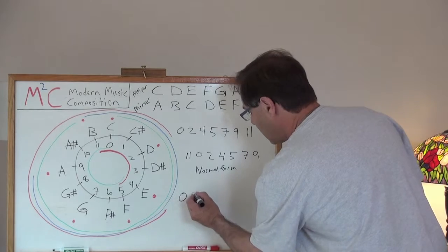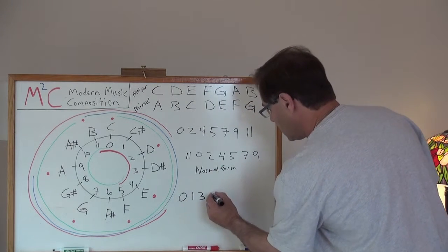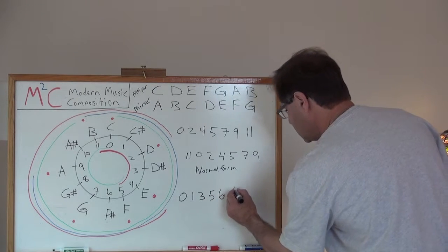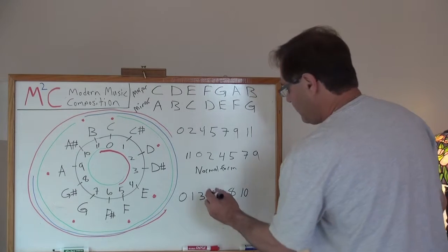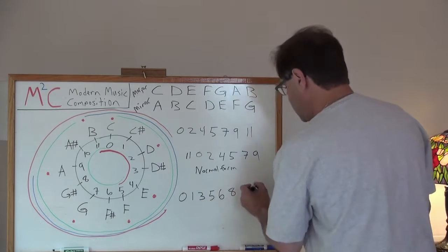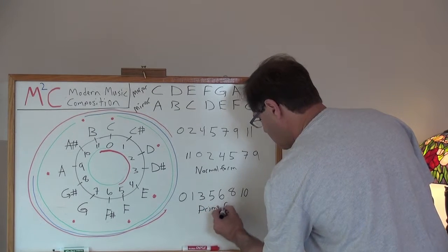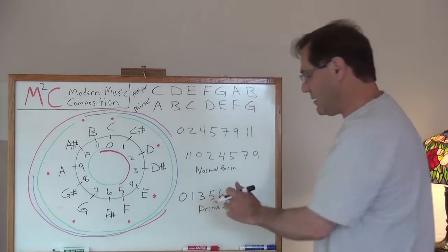11, we got a zero. We got a one, three, five, six, eight, ten. This is in prime form, and it's the most fundamental form of the diatonic scale.